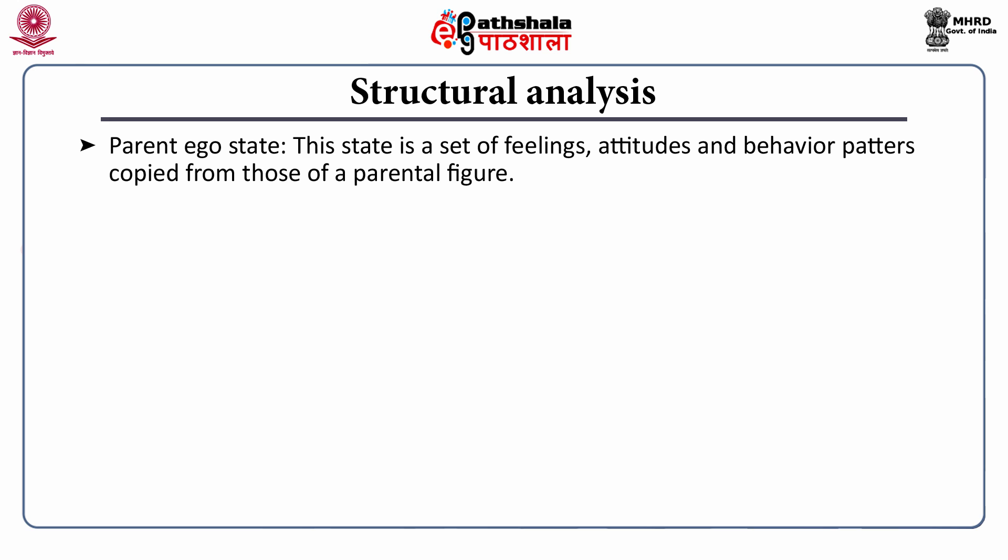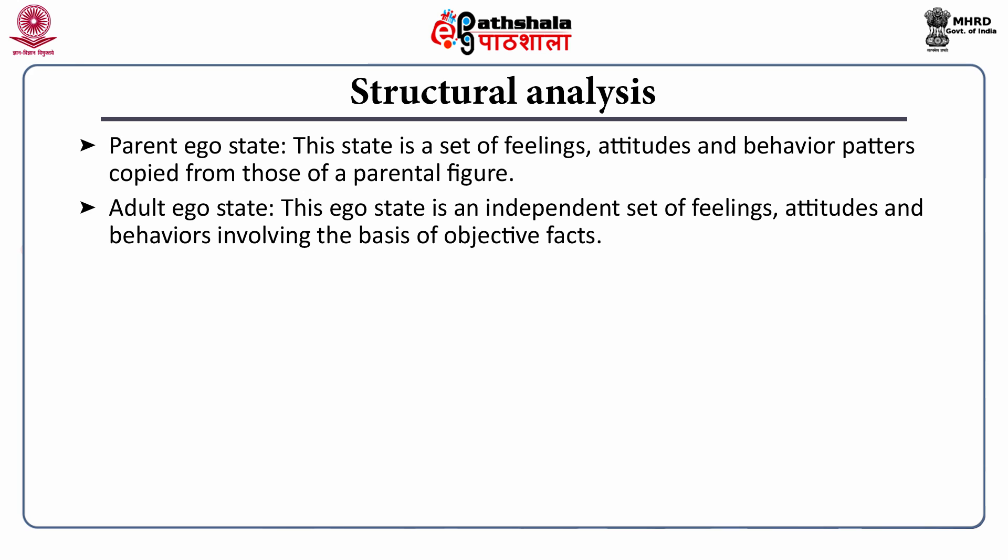The parent ego state is a set of feelings, attitudes, and behavior patterns copied from parental figures. Behavior includes prejudicial, critical, consoling, and nurturing actions. The adult ego state is an independent set of feelings, attitudes, and behaviors involving the basis of objective facts. When the individual gathers facts, tests reality, and computes a rational objective answer, the state is an adult state.